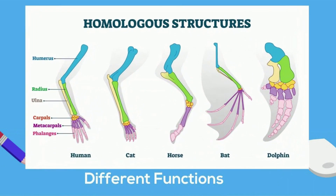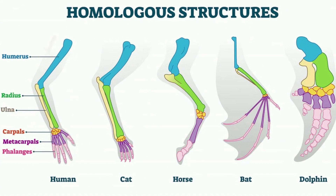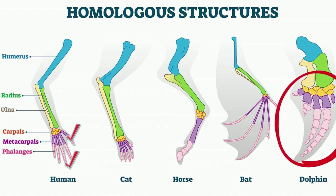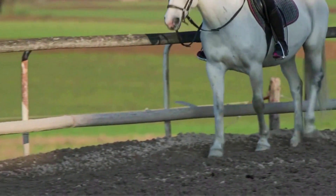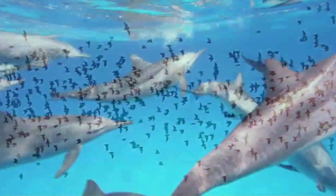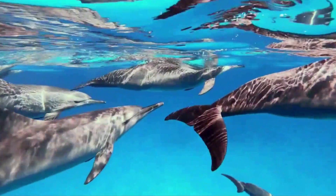Notice that they are made up of similar bones. Each structure has a humerus, two forearm bones — the radius, shown in green, and the ulna, shown in yellow — as well as metacarpals and phalanges. The dolphin has five phalanges just like we have five fingers, but each structure has a slightly different function. The horse uses the structure to walk and run, the bat uses it to fly, and the dolphin uses it to swim.